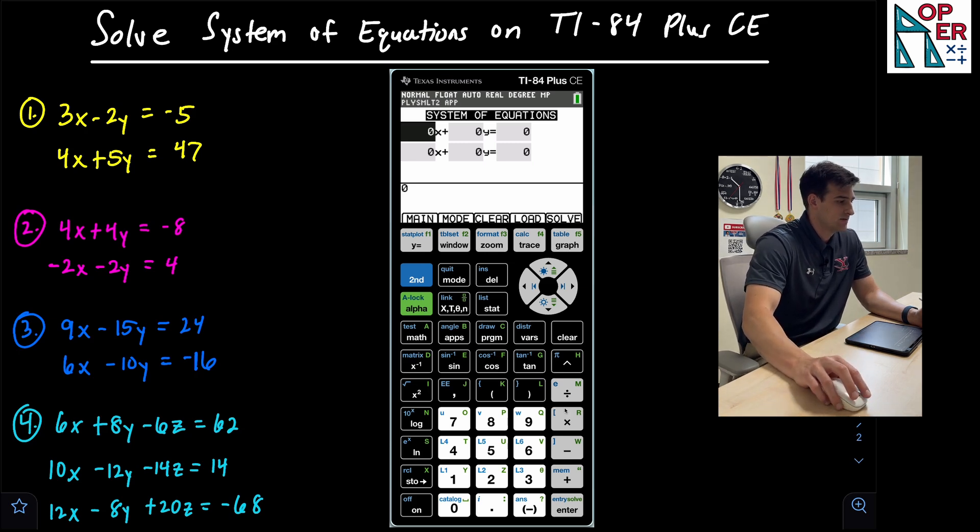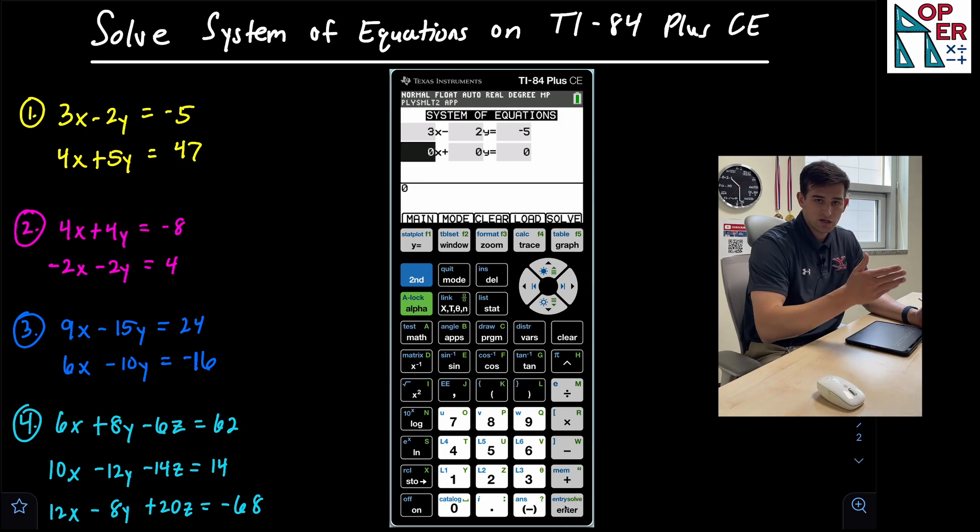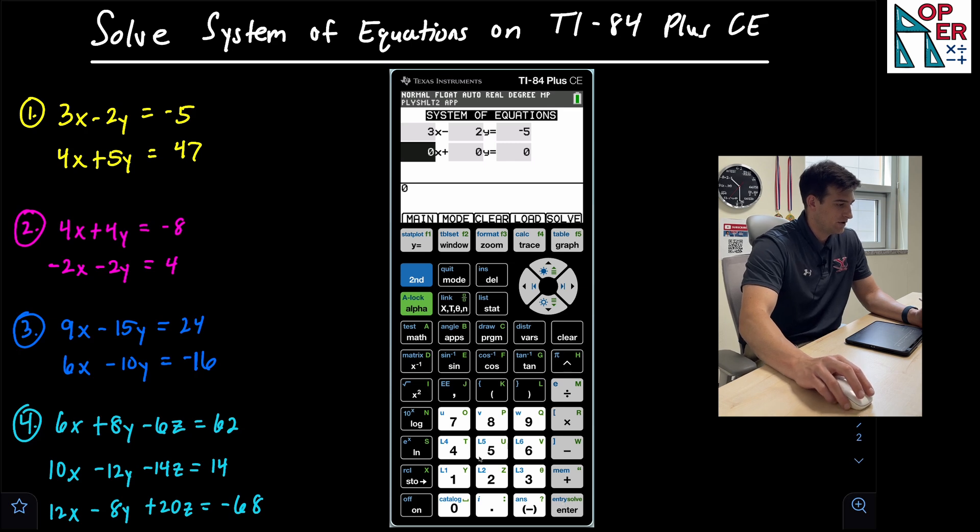So example number one is 3X. I'm going to type in a three hit enter. Now it's minus 2Y. So I'm going to change this to subtraction. And then we have 2Y and that's equal to negative five. When I hit enter, it automatically drops me down to my next X value for my other equation, which is 4X plus 5Y is equal to 47. So I hit enter.